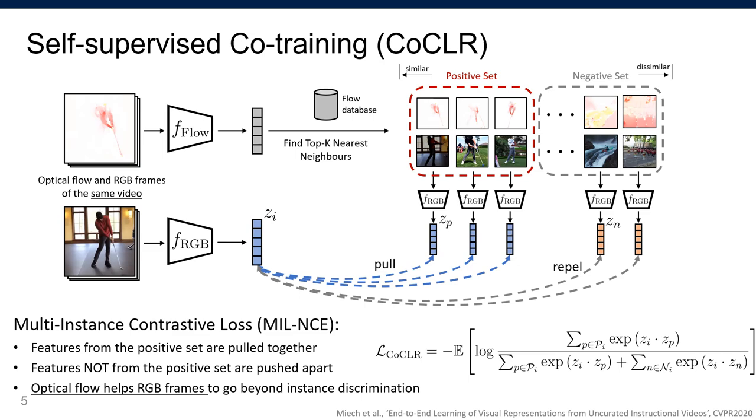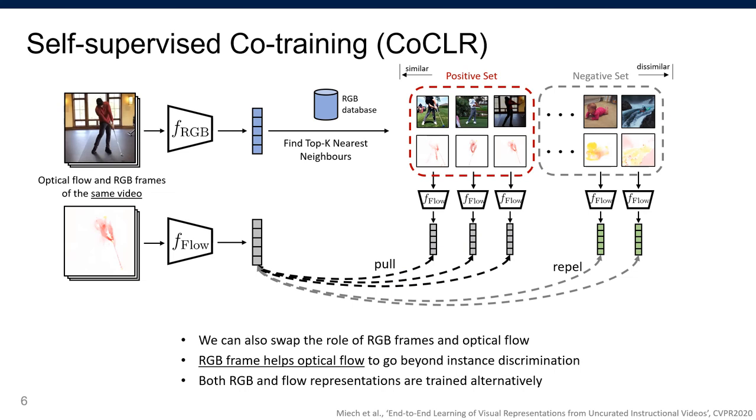In this way, optical flow space helps RGB space to find hard positives. We can also swap the roles of RGB and optical flow by using RGB space to find hard positives and train the optical flow network. We can alternatively do this to improve both networks.